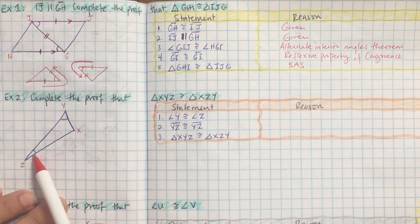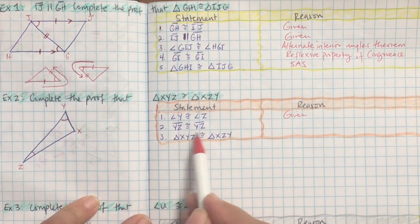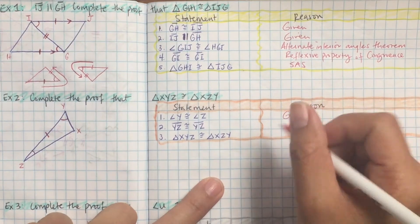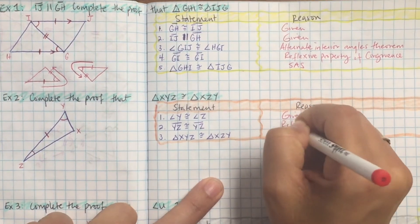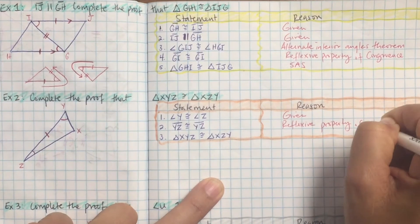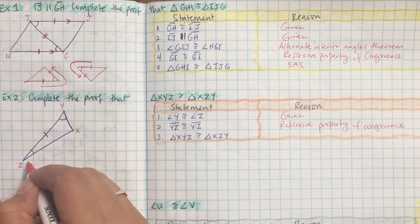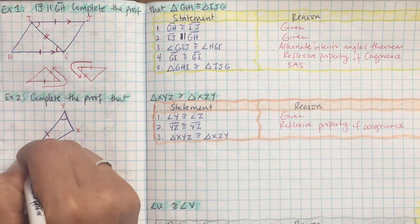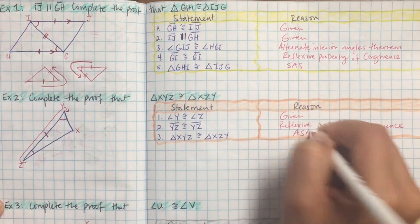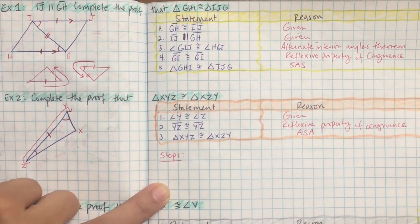Now complete this next proof. Why is angle Y equal to angle Z? Because it's already given in the problem. Why is YZ equal to itself? Same thing equals the same thing — reflexive property. Put a tick there. Starting from Z, go angle-side-angle. That's ASA, so the triangles are congruent by angle-side-angle.